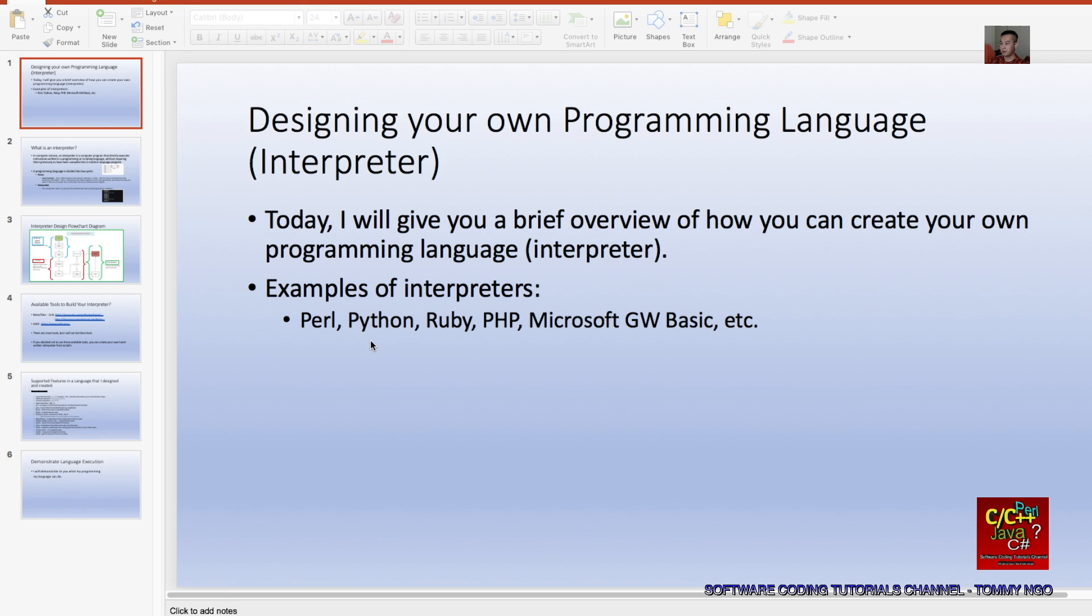Examples of interpreters out in the world are Perl, Python, Ruby, PHP, Microsoft GW Basics, etc. This is an old one I listed here. Many years ago Microsoft included this interpreter in every operating system in DOS.